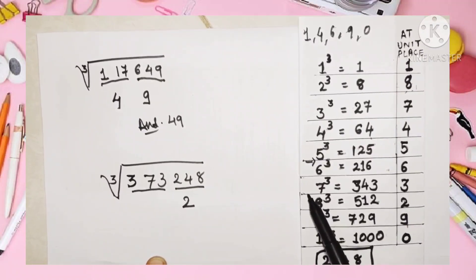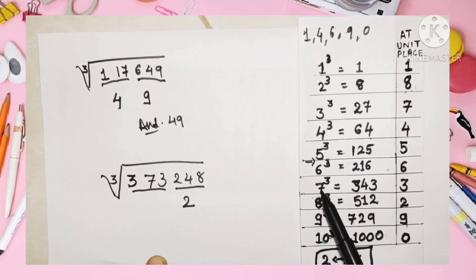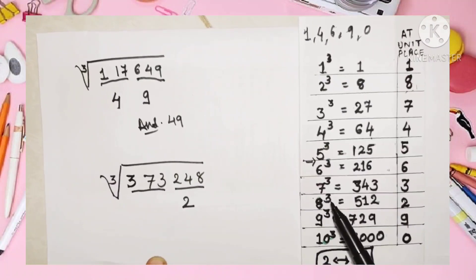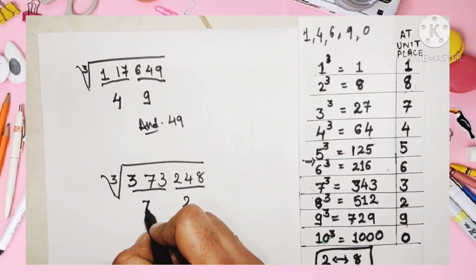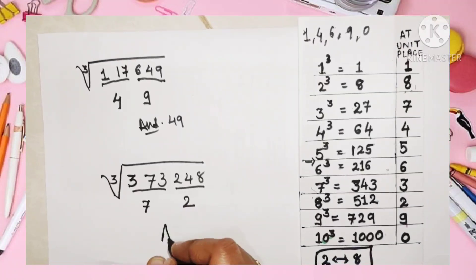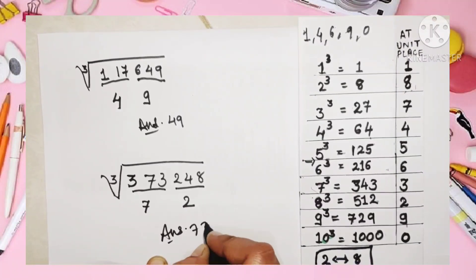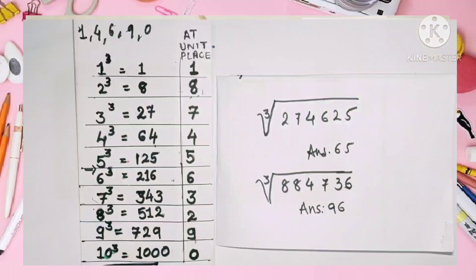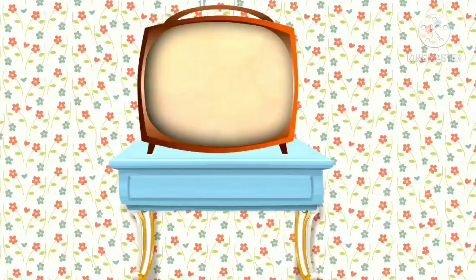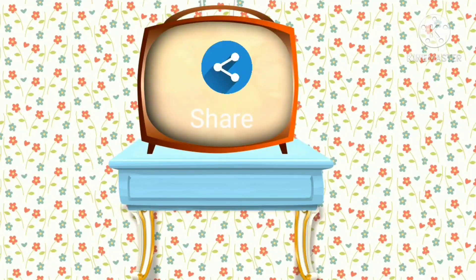For the second group, 373 falls between 343 and 512, which are the cubes of seven and eight. We take the smaller number, seven, and write it down. So our answer is 72. You can find two more examples here for practice — if you practice, you can definitely solve it in seconds. Thank you for watching; please subscribe, like, and share.